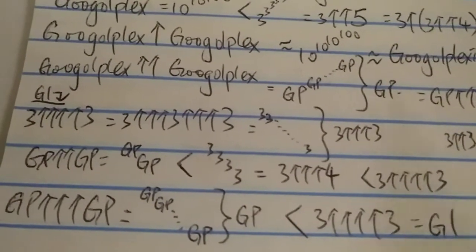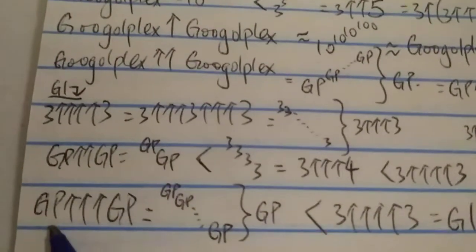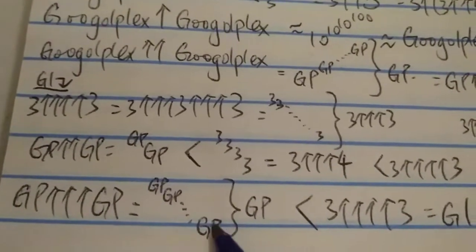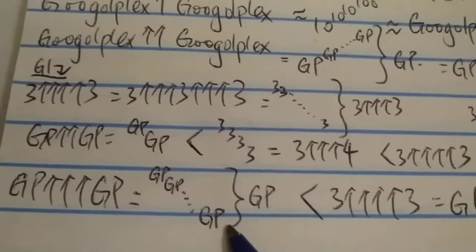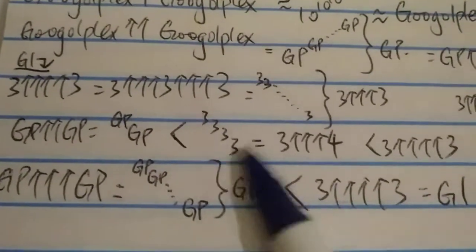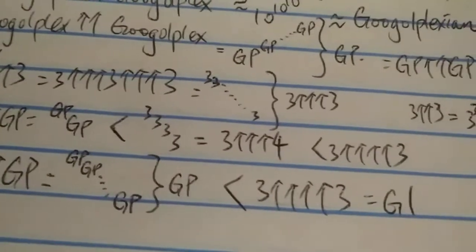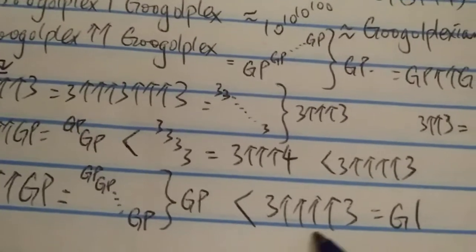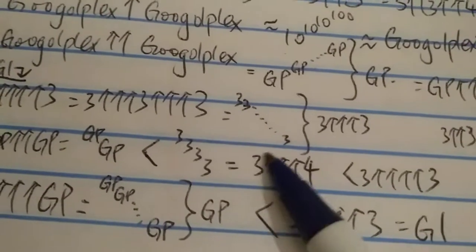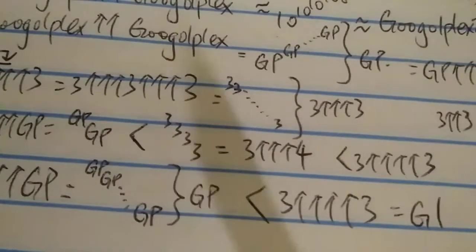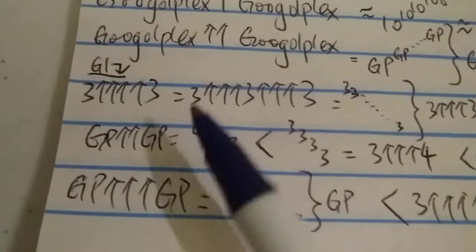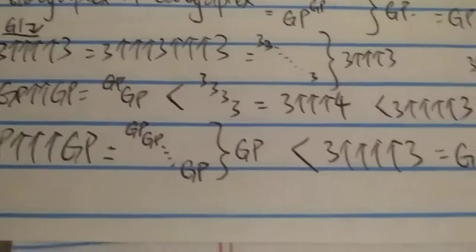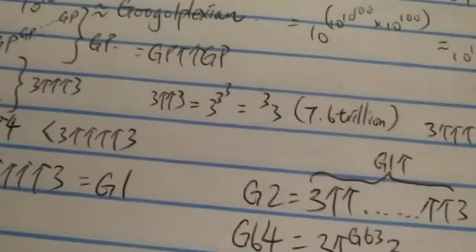In a last effort, what about Googolplex ↑↑↑ Googolplex — can it beat G1? Written as a tetrational tower, it has Googolplex levels high. But for 3 ↑↑↑↑ 3 — G1 — that tower is 3 ↑↑↑ 3 levels high, and 3 ↑↑↑ 3 is way bigger than Googolplex. So even Googolplex ↑↑↑ Googolplex does not beat G1. There you have it — it doesn't beat Graham's number, not even close.